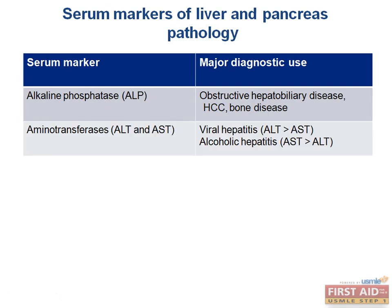Two aminotransferases, AST and ALT, are used to differentiate viral and alcoholic hepatitis. In viral hepatitis, the ALT level is higher than the AST level. In alcoholic hepatitis, the AST level is greater than the ALT. AST elevations are also seen in myocardial infarctions. A good way to remember this is that scotch and tonic, or AST, increases with alcohol.